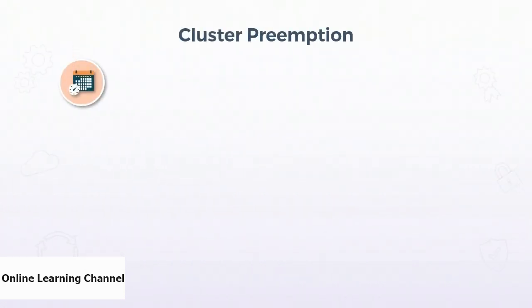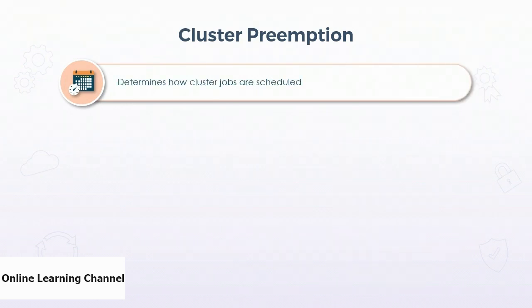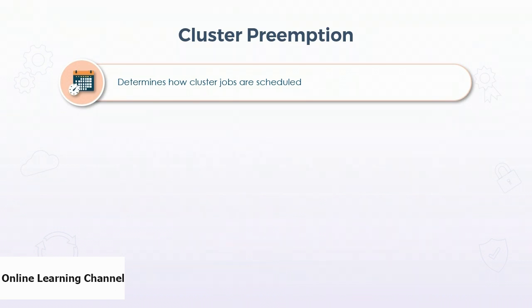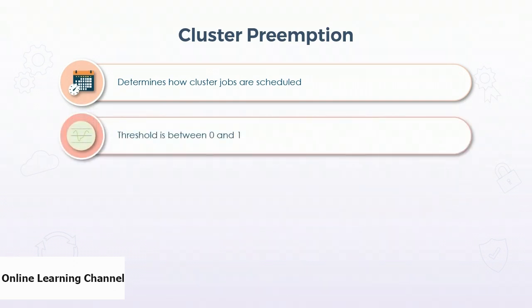Databricks has a cluster scheduler that is responsible for determining jobs' fair access to the cluster resources. The scheduler has the ability to preempt clusters, meaning to interrupt the cluster to allow other clusters to run. The scheduler uses preemption to try to give processes their fair share of the processing time. How it works is affected by several Spark settings which must be set before a cluster is launched. There's a setting to enable or disable preemption altogether. Paired with this is a fair share threshold setting, which can be between 0 and 1.